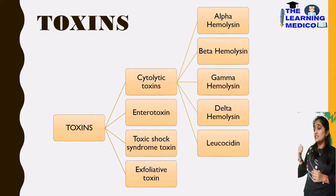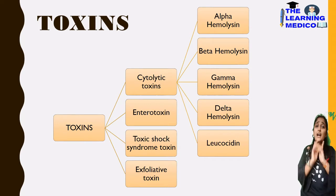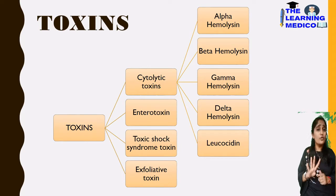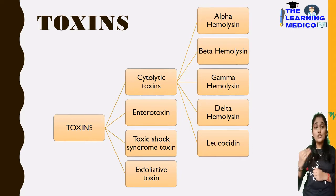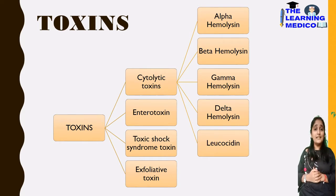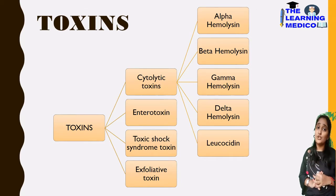The four main toxins are: cytolytic toxin, enterotoxin, toxic shock syndrome toxin (TSST), and exfoliative toxin. The TSST is very important. The cytolytic toxin has 5 types — four hemolysins (alpha, beta, gamma, delta) and one leucocidin.